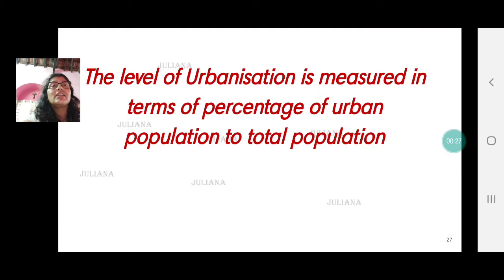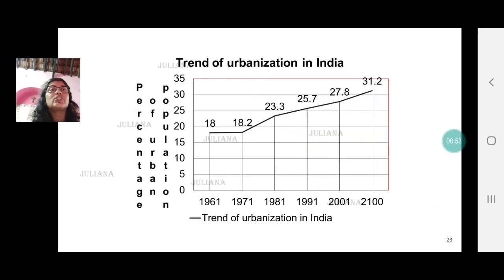The level of urbanization is measured in terms of percentage of people residing in urban areas to the total population. So how do we calculate percentage of urban population? It is the total people living in urban areas upon the total population of the country into 100. Urbanization is measured in percentage.